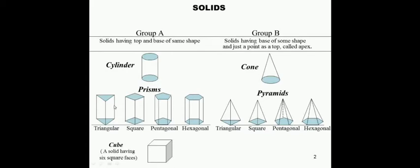What is the difference between a prism and a pyramid? Consider the triangular prism and triangular pyramid. For a triangular prism, the base and top are triangular in shape. Whereas for a triangular pyramid, the base is triangular and at the top there is an apex. Another difference is that for prisms, there will be vertical rectangular faces, and for pyramids, there will be vertical triangular faces.